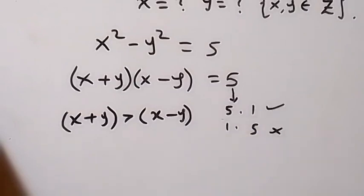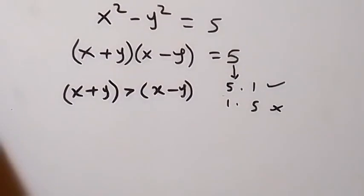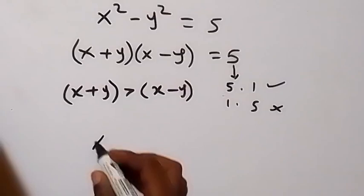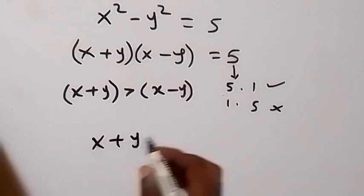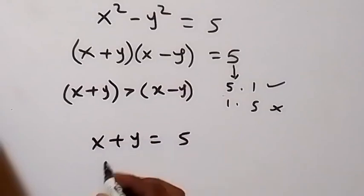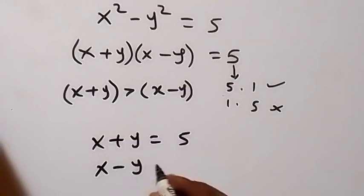When we now equate from here, we have the first which is x plus y now equals 5, and x minus y equals 1.